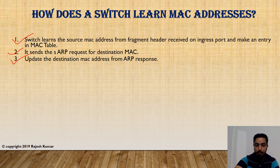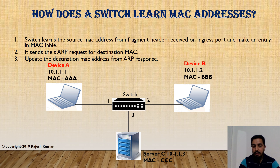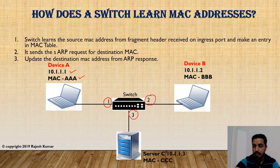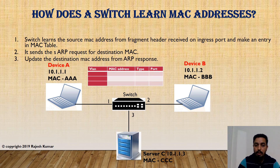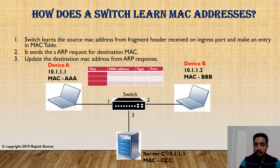Once it is replied with the destination MAC address from the machine, it adds that entry also to the MAC table. Let's discuss this scenario with more details. Assume we have three devices — device A, B, and C (a server). Device A, with IP address 10.1.1.1 and MAC address AAA, is connected on port 1 of the switch. Device B is connected on port 2, and server C is connected on port 3. As of now, the switch does not know about any MAC addresses of these devices.